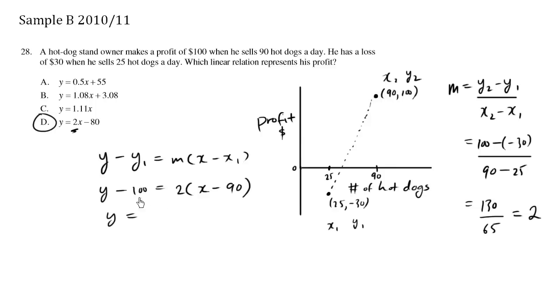So we have y equals, I'm going to add 100 to both sides, I'm going to distribute here, 2x minus 180, negative 180 plus 100 is negative 80. So that's where this y-intercept came from.